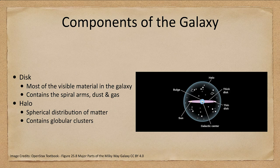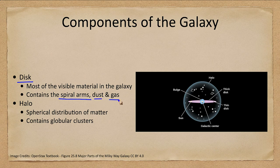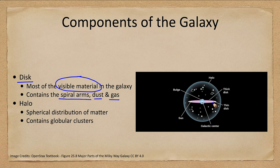When we look at the galaxy we'll look at several different components. Primarily we'll have the disk of the galaxy. The disk contains most of the material, the spiral arms, the dust and the gas. Most of the visible material within the galaxy is flattened down to a disk.